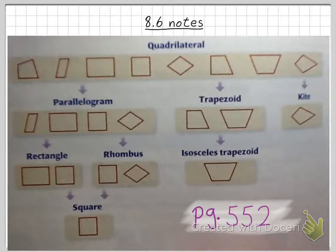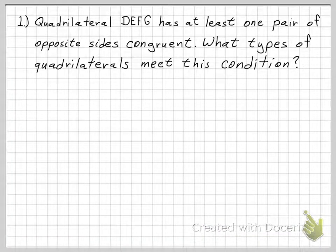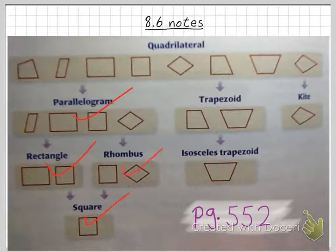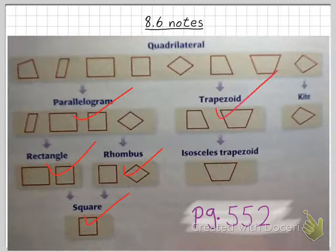Here's a typical problem: quadrilateral DEFG has at least one pair of opposite sides congruent. What types of quadrilaterals meet this condition? Going back to the chart with the criterion of at least one pair of opposite sides congruent — a parallelogram meets this, and so do rectangles, squares, and rhombuses. In rhombuses and squares we have two pairs of opposite sides congruent, but that still meets the 'at least one' criterion. Isosceles trapezoids meet that criterion as well.